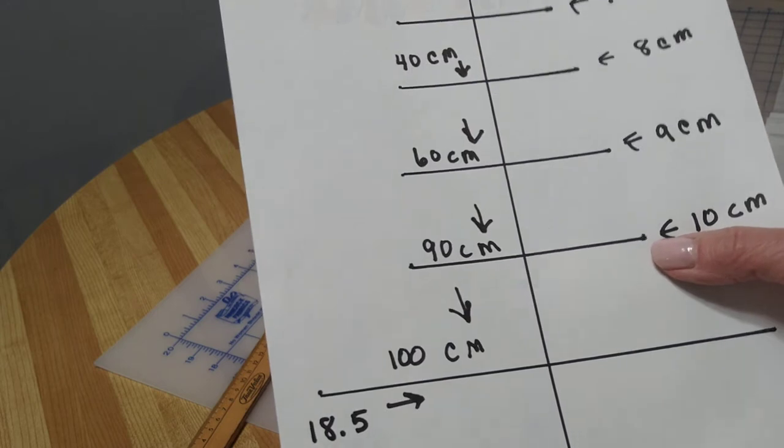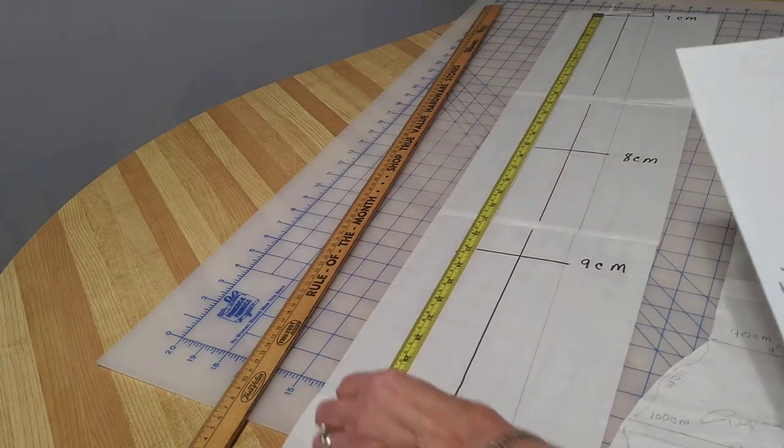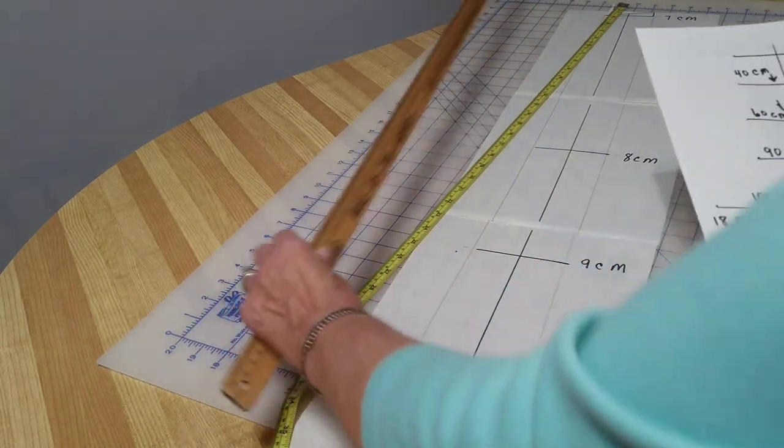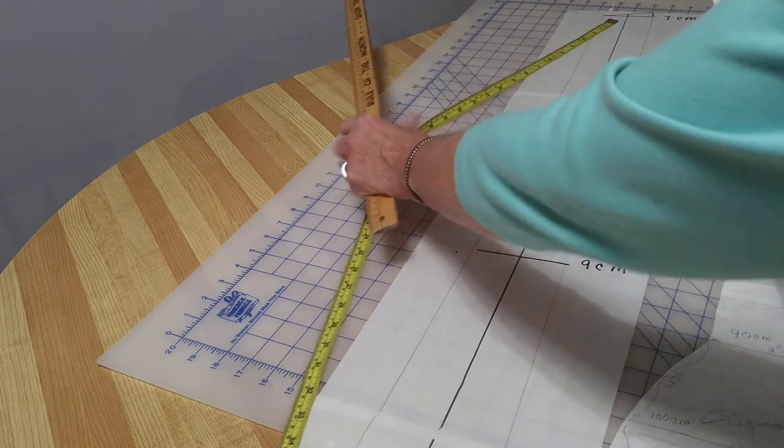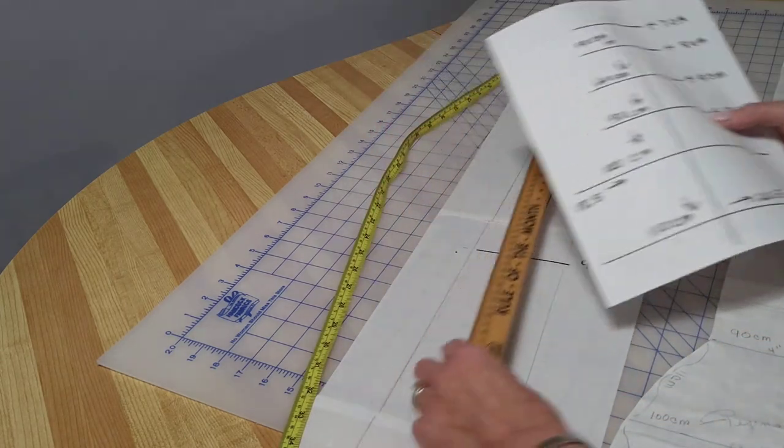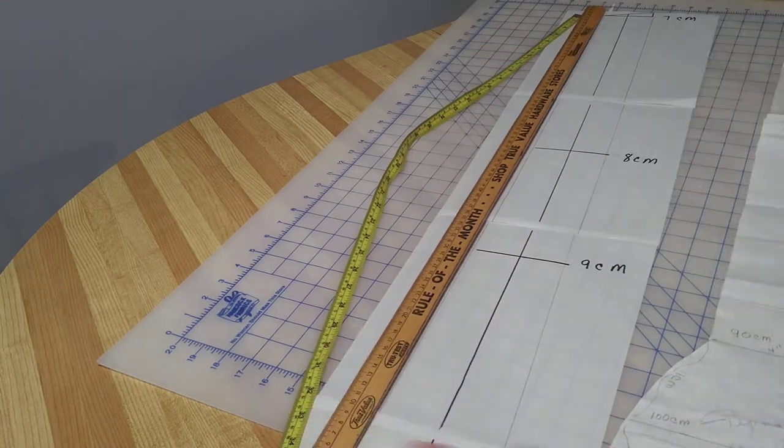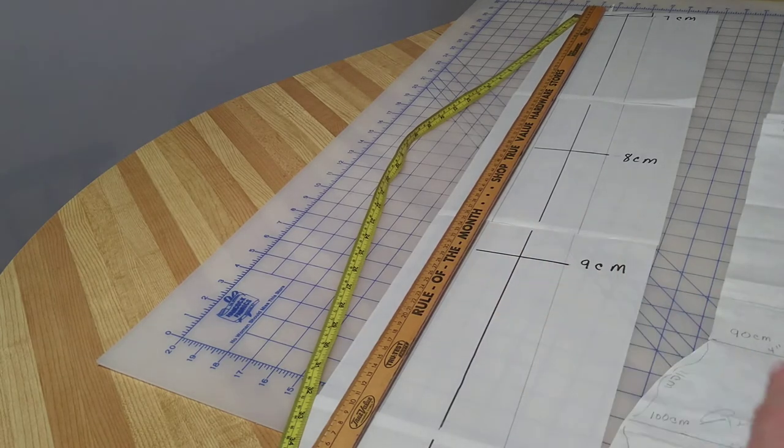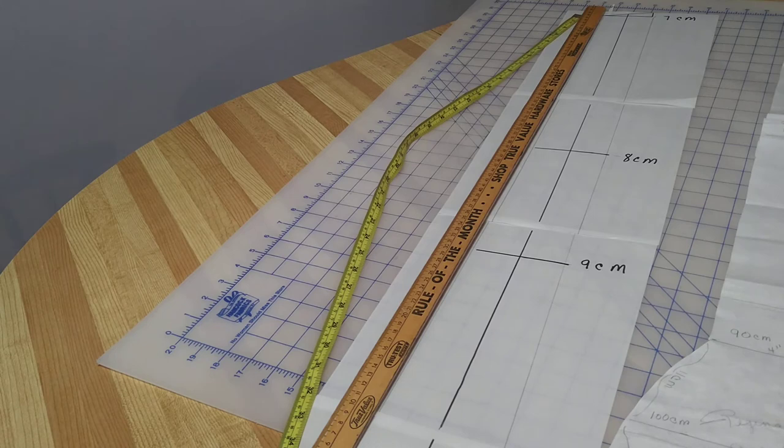Now from the 90 centimeters, you can take your ruler, start at the top, and go down to the 90 and draw the line on either side. Now we still have another line to do for the bell.